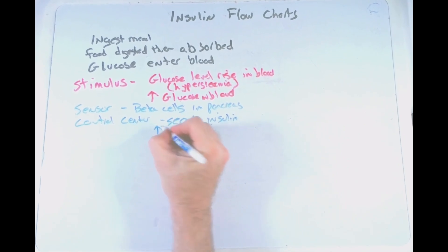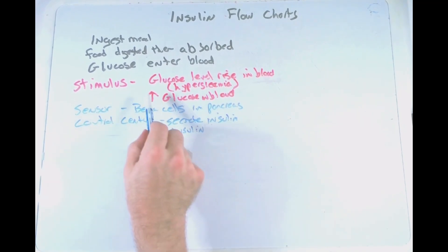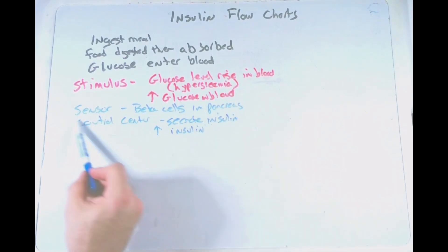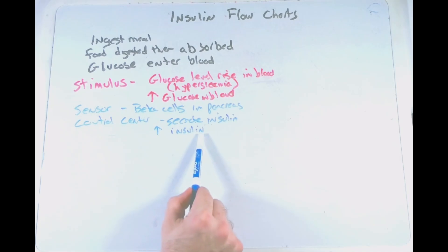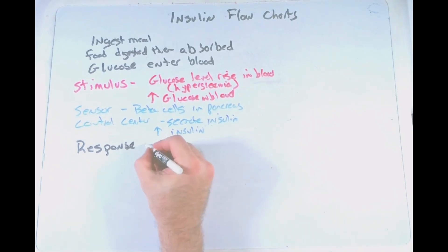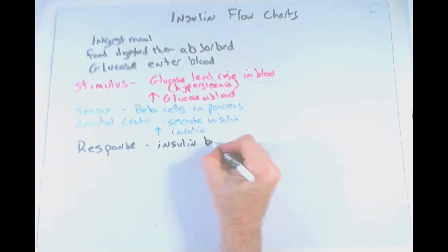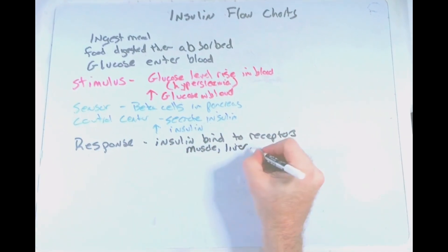This can be written as an increase in insulin distributed throughout the body. So the stimulus — the increase in glucose in the blood — is evaluated by the sensor function of the beta cells. The control center triggers an effector response, secreting insulin and increasing insulin levels. That insulin, as a hormone, gets into the bloodstream, circulates through the body, and then we start to see a response — insulin will bind to receptors on insulin-sensitive cells such as muscle, liver, and fat cells.